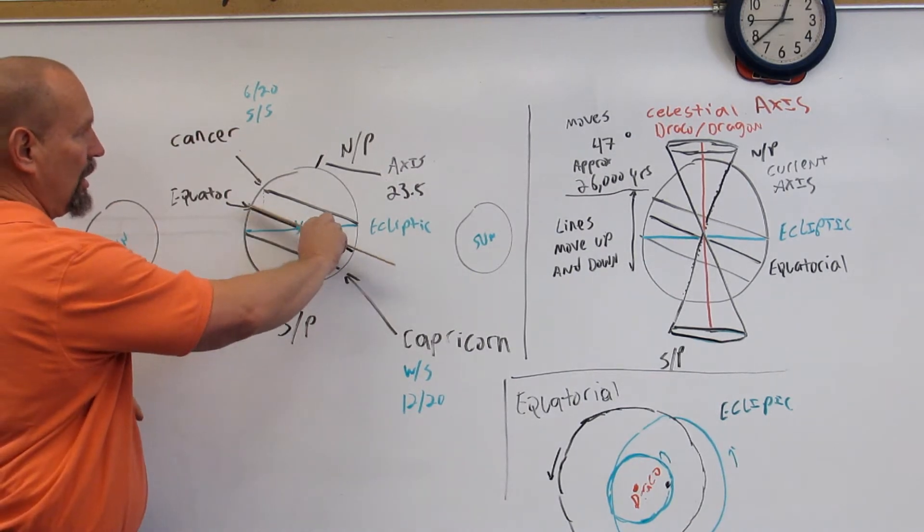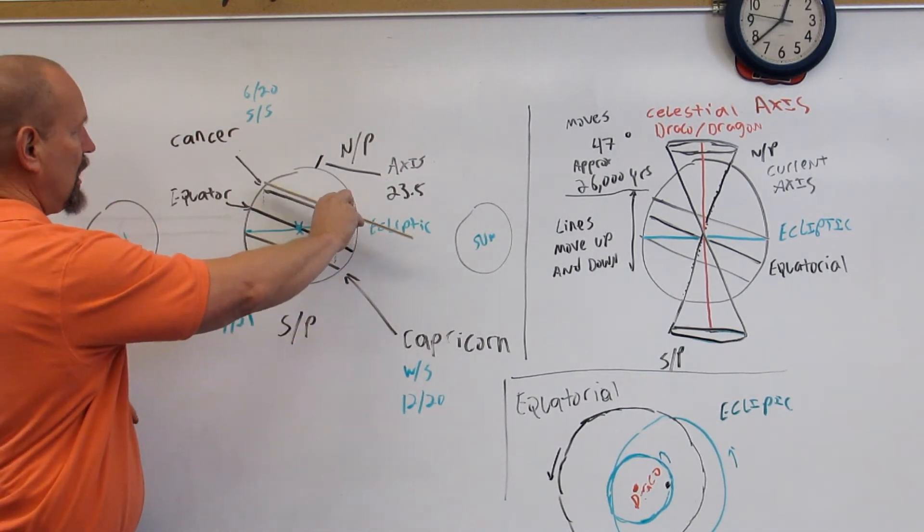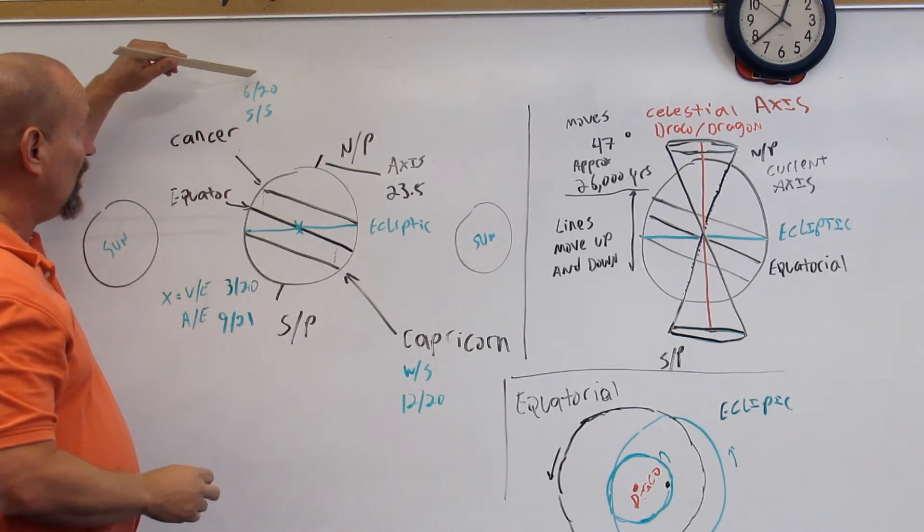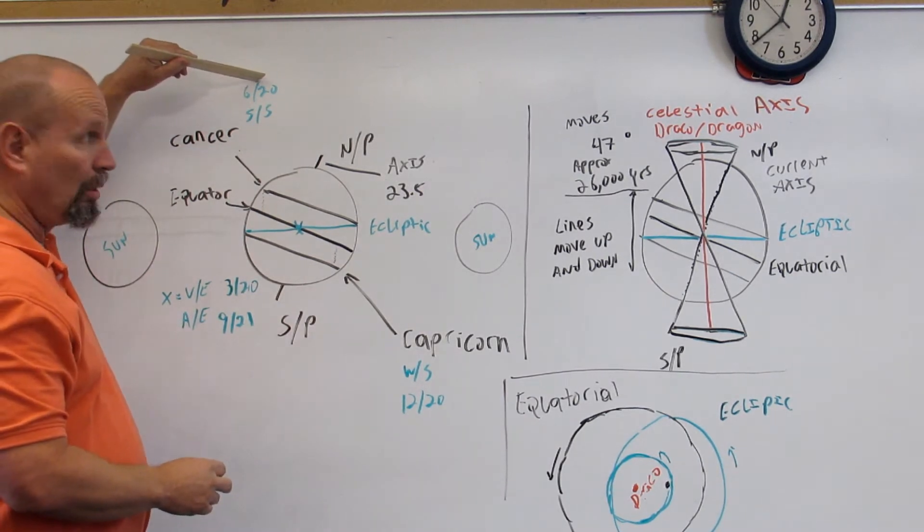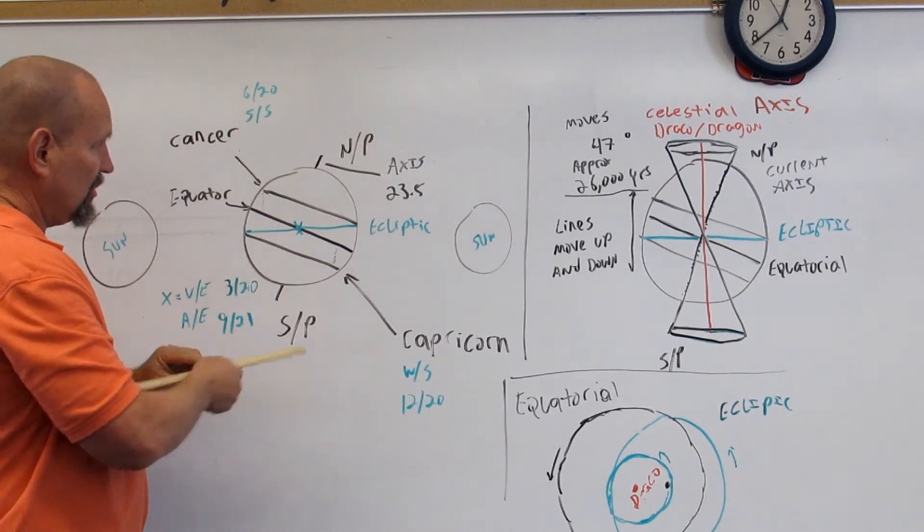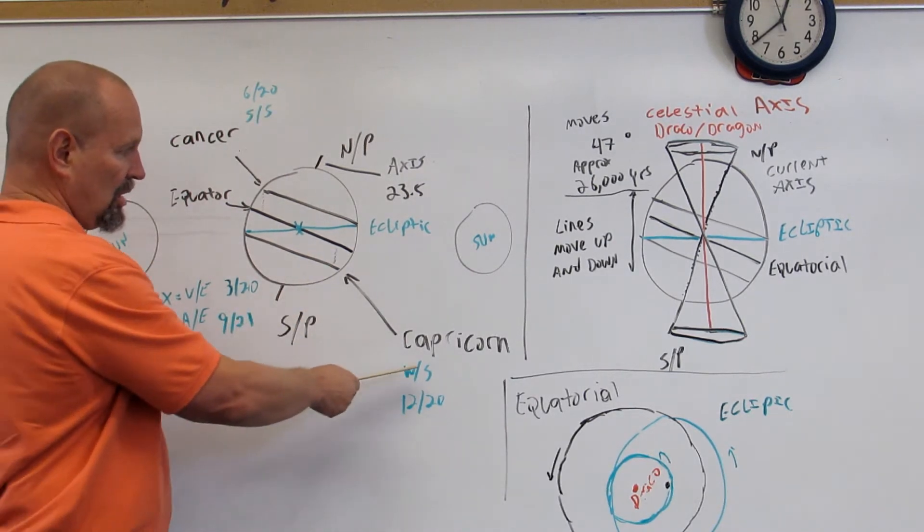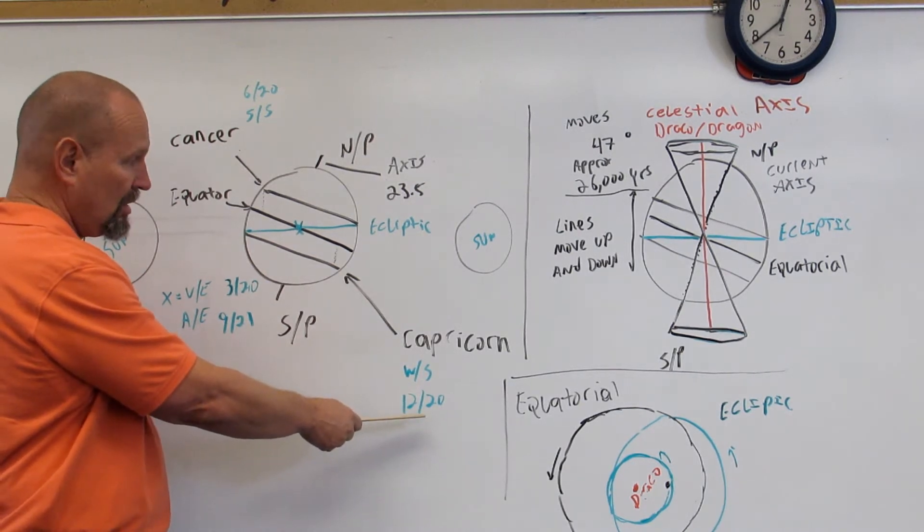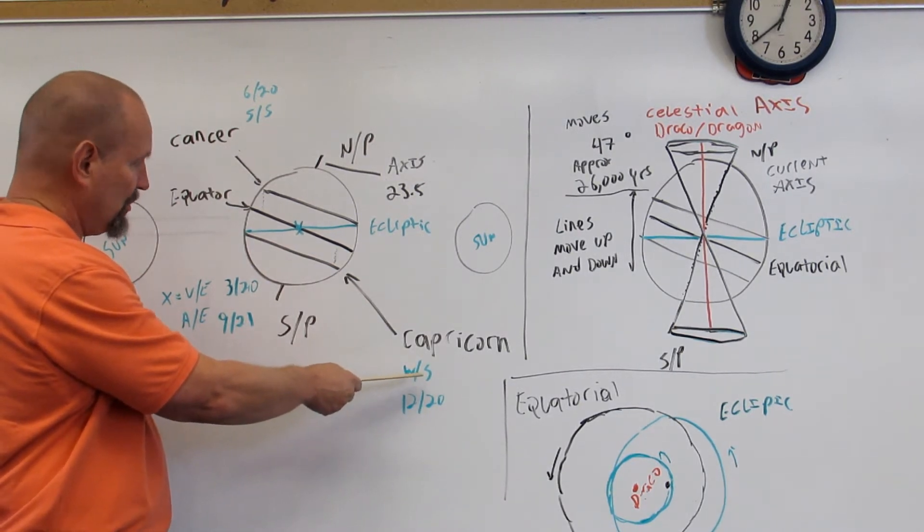The axis is sitting at 23 and a half degrees. This is the equator. This is the Tropic of Cancer representing the summer solstice on June 20th, 620. This is the Tropic of Capricorn representing the winter solstice on December 20th, 1220. This is the winter solstice.